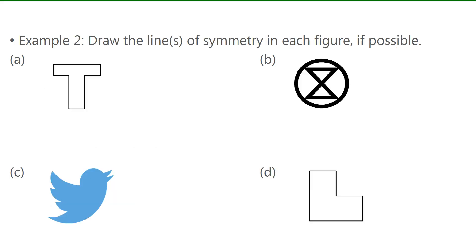In example two, we have to draw in any lines of symmetry if possible. For A, if I drew a line straight down the middle and folded it over, it would coincide with itself. There are no horizontal or oblique lines of symmetry, so this shape has one line of symmetry.